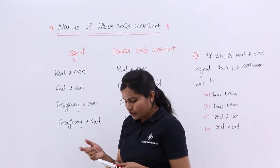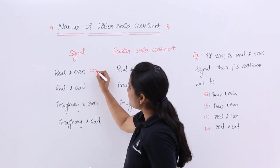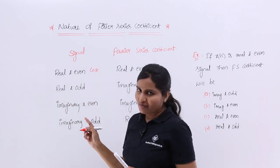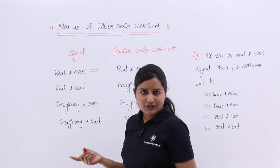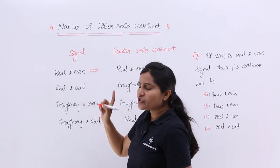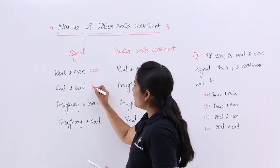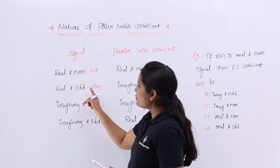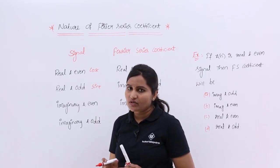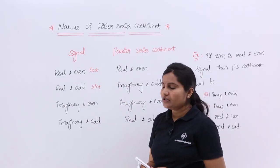What is real and even? Real and even means — take cos(t) as an example. This is a real function as you are not having any imaginary part like i or j here, and this is also an even function. So real and even function example: cos(t). Real and odd function example: sin(t). Here you are not having any i or j, so it is a real function, and sin(t) is an odd function.